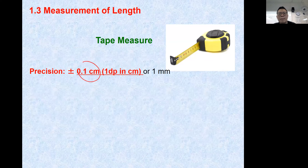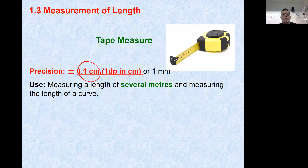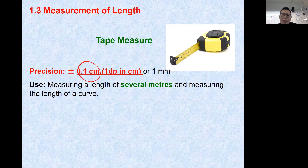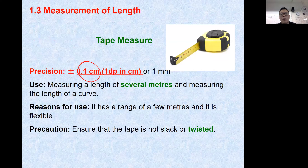A tape measure also has a precision of 1 decimal place in cm. The key difference between a meter rule and tape measure is that a meter rule can only measure up to one meter, while a tape measure can go up to three, four, or five meters. So for anything under one meter you could use either, as they offer the same accuracy.